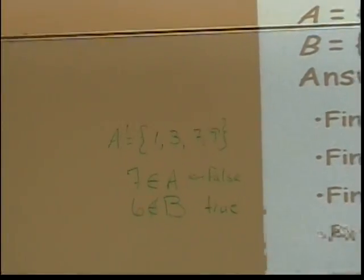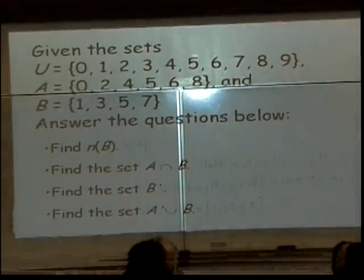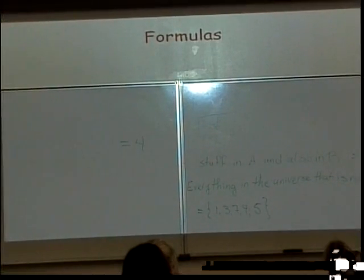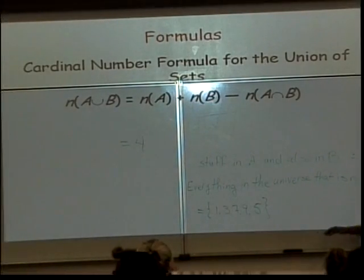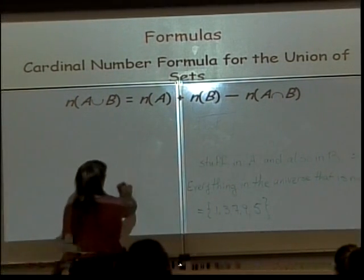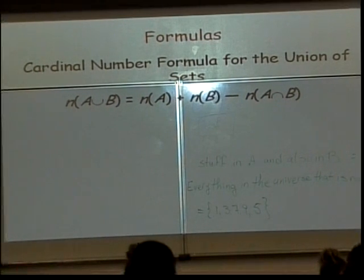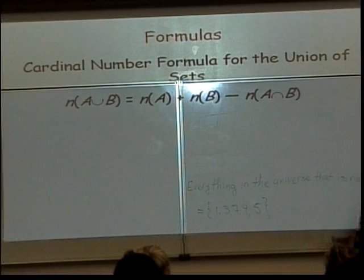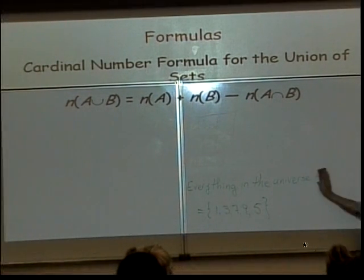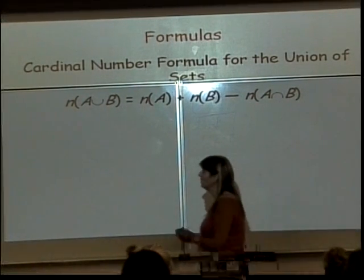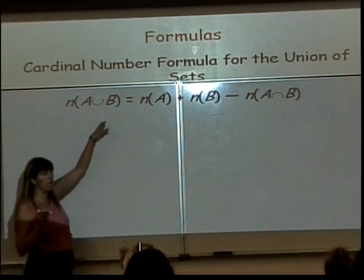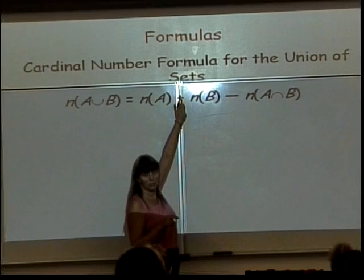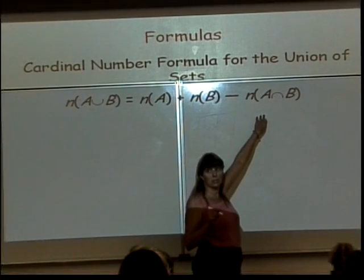Now, what you're going to find is we have several problems like this. But then we have problems where we actually have to apply things that are formulas. And here are our formulas. And these are big, icky-looking formulas, but don't let them bother you too much. The name of this one is enough to scare people. It's called the Cardinal Number Formula for the Union of Sets. I'm just going to tell you this formula you do not have to memorize. It will be printed on your exams. Basically, what it says is the number of things in A or B is equal to the number of things in set A plus the number of things in set B minus the number of things that are in both sets at the same time. So remember, this is the number of things in A and B at the same time.